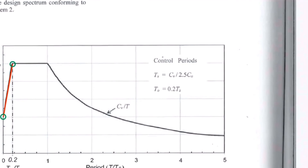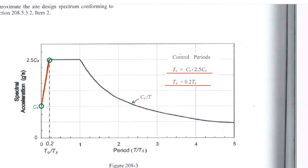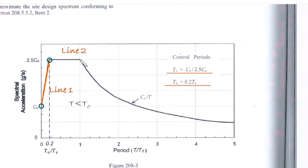You might be wondering what TS and TO are used for in this graph. TO is the upper limit of line 1, and TS is the upper limit of the horizontal line. First we calculate TO. Second, we compare the natural time period of a mode shape to the TO value. If the period is less than TO, then the spectral acceleration is calculated from line 1. If the time period is greater than or equal to TO and less than TS, the spectral acceleration is calculated from line 2. Otherwise, the spectral acceleration is obtained from the curve.